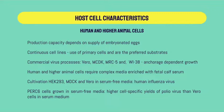Human cell lines and avian cell lines are adapted to grow in suspension, facilitating cultivation of cells and scale-up in vaccine production. Human and higher animal cells require media enriched with fetal calf serum, increasing batch-to-batch variations and involving the risk of introducing extraneous agents. Media development enables the cultivation of certain cells in serum-free media, achieving better yields.